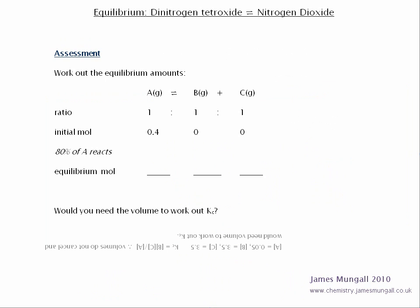So here's a similar question for you to have a quick look at. It says, work out the equilibrium amounts. We've got A reacting to give B plus C, all in a 1 to 1 ratio. And initial mole of A, 0.4,